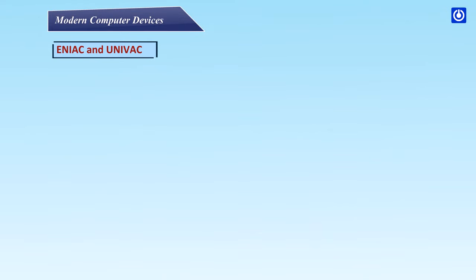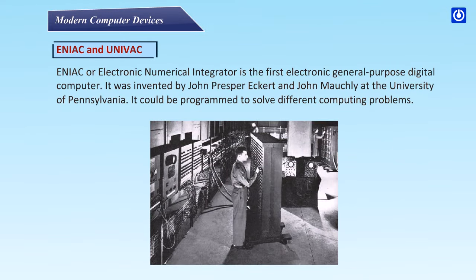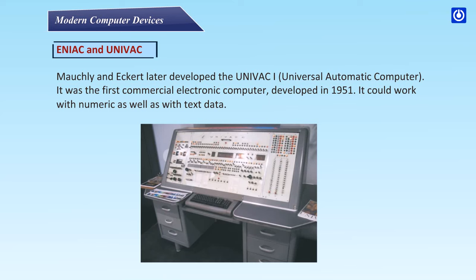ENIAC and UNIVAC: ENIAC, or Electronic Numerical Integrator, is the first electronic general-purpose digital computer. It was invented by John Presper Eckert and John Mauchly at the University of Pennsylvania. It could be programmed to solve different computing problems. Mauchly and Eckert later developed the UNIVAC-1, Universal Automatic Computer. It was the first commercial electronic computer, developed in 1951, and could work with numeric as well as text data.